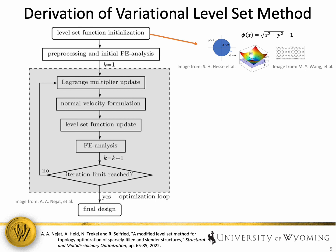Finally, we have derived all of the main equations that are required to implement the level set optimization method. If we look at an overview of how the optimization process works, we begin by defining the level set function within our design domain. Recall, the level set function is traditionally defined using a signed distance function. One of the easiest shapes to define the function for is that of a circle. As a result, many applications of the level set method will simply define the initial condition as a series of circular voids throughout the design domain.